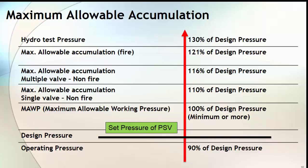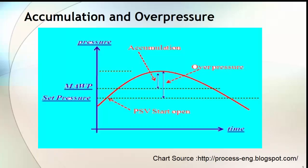The PSV is designed in such a way that it will not allow pressure buildup in the equipment beyond this limit. Let's go back to the previous chart to conclude what accumulation and overpressure are. The third dotted line shown in this chart is the maximum allowable accumulation, which depends on the code case — that means whether the equipment is fitted with a single PSV or multiple PSVs, or whether the equipment is fire type or non-fire type.